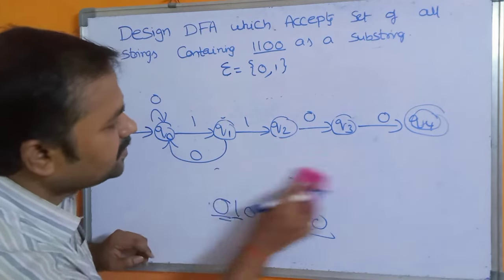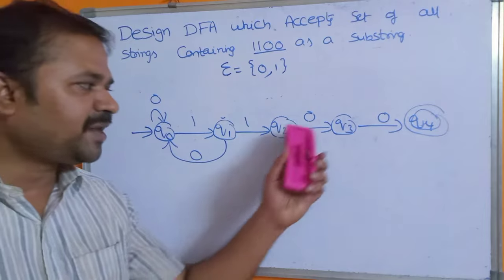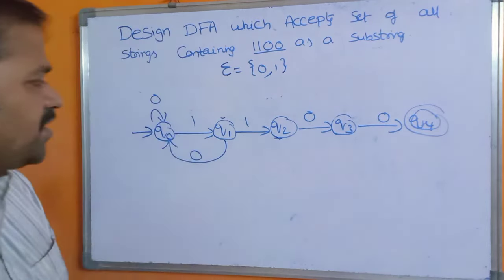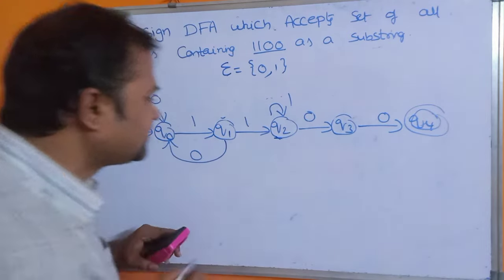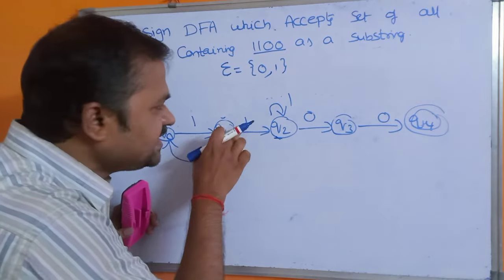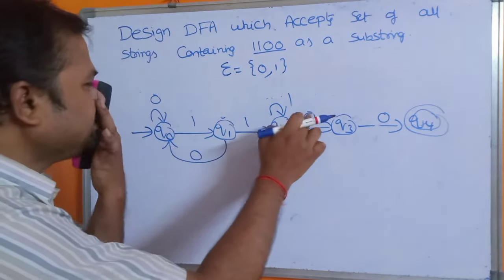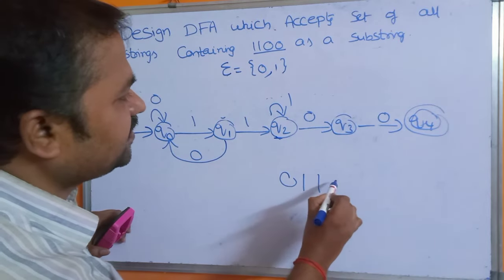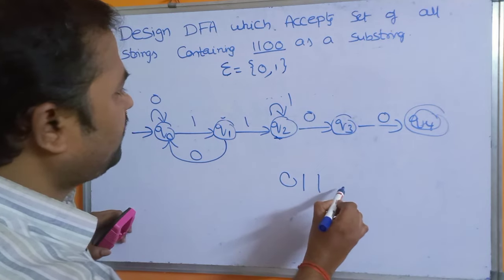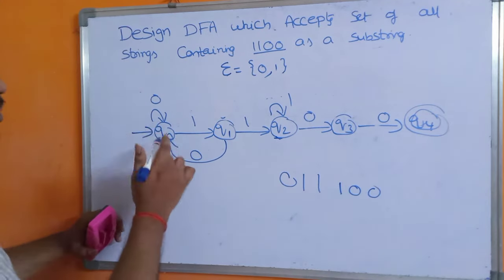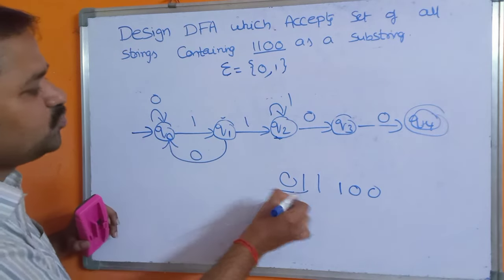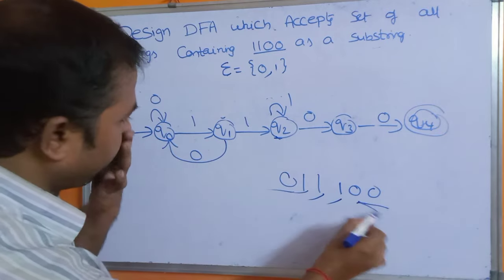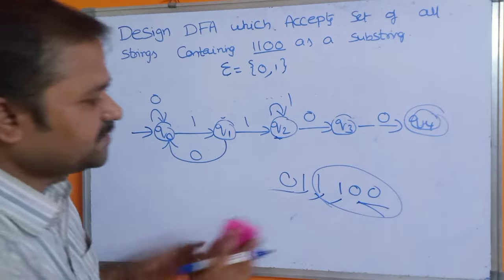Now let us focus on Q2. On Q2, only 0 was applied, so we have to apply 1 on Q2. Can we take a self-loop on 1 at Q2? Yes, we can. Why? Because 1100 is the substring. For example, consider the string 011 100: 0 stays at Q0, 1 moves to Q1, 1 moves to Q2 via self-loop, then 100 completes the path to the final state with 1100 as the substring.